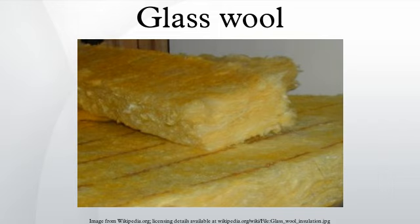Glass wool is an insulating material made from fibers of glass arranged using a binder into a texture similar to wool. The process traps many small pockets of air between the glass, and these small air pockets result in high thermal insulation properties. Glass wool is produced in rolls or in slabs, with different thermal and mechanical properties.